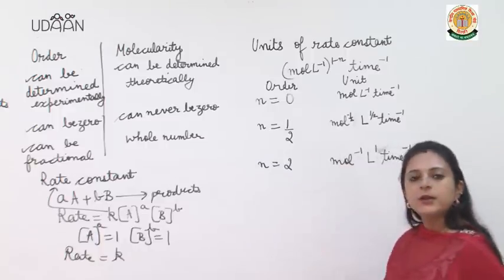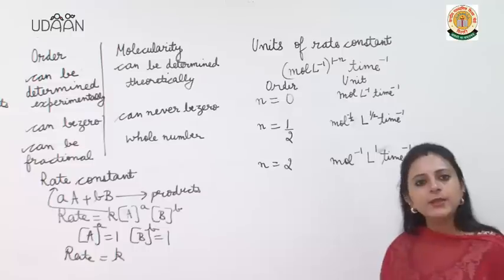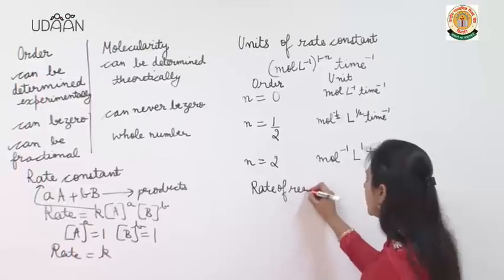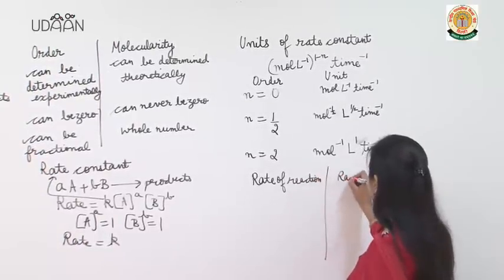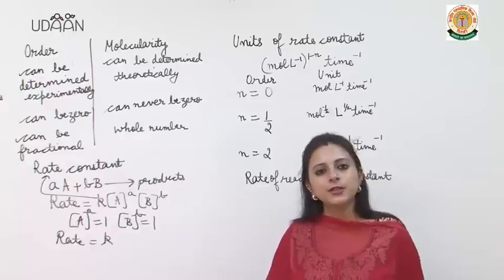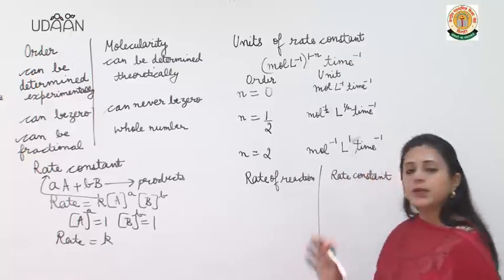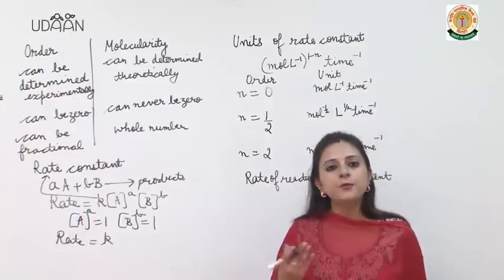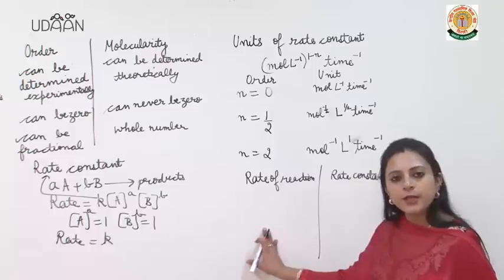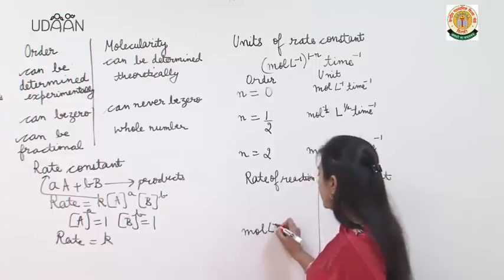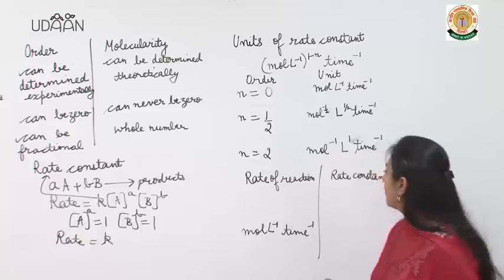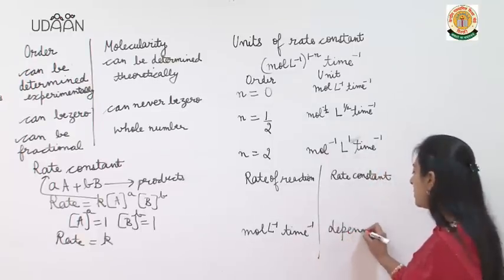Depending upon N, I can write the units for any order of reaction. Now let us understand the differences between rate of reaction and rate constant. Rate of reaction is the change in concentration per unit time, with units mol·L⁻¹·time⁻¹. Rate constant is the rate of reaction when molar concentration of reactants is unity, and its units depend on the order of reaction.